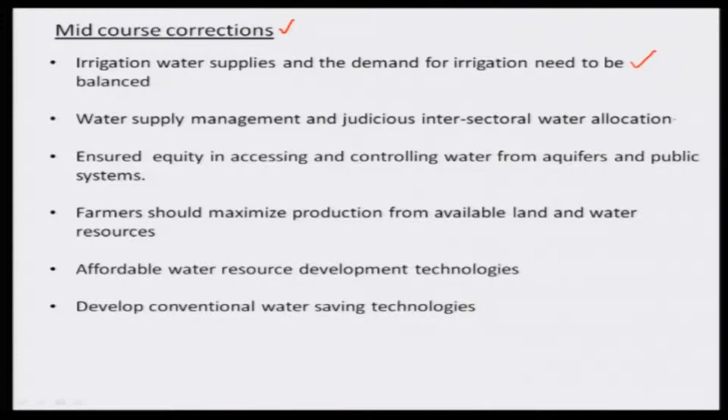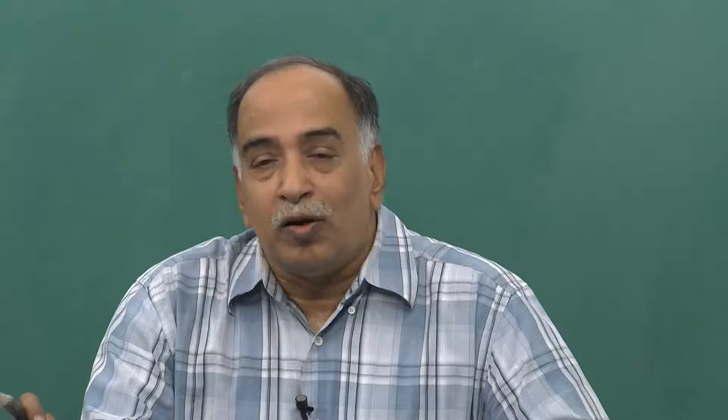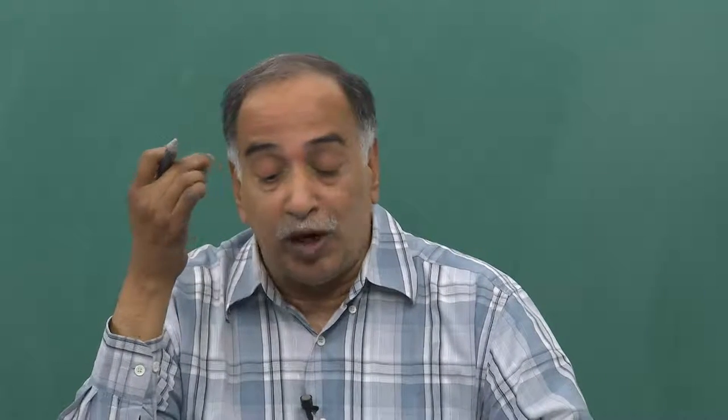The second one is water supply management and inter-sectoral water allocation. Whenever we construct large reservoirs — many of them in the initial stages of the 60s were there only for irrigation and power supply. Over the period, water supply has also been included from the same reservoirs. So this type of allocation for agriculture, drinking water, environmental issues, and industries need to be balanced. Depending upon the growth and sectoral allocation, we have to manage the existing water resources available in the reservoir.